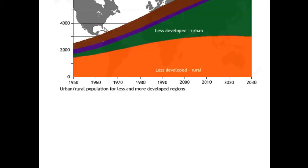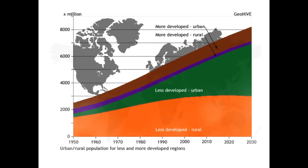However, since 1950, urbanisation has slowed in most MEDCs and now some of the biggest cities are losing population as people move away from the city to rural areas. Since 1950, the most rapid growth of urbanisation has occurred in LEDCs in South America, Africa and Asia. Between 1950 and 1990, the urban population living in LEDCs doubled, while in developing countries the increase was less than half.